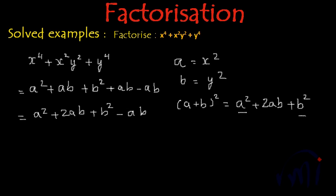This much is a plus b whole square, so this can be written as a plus b whole square and this is minus ab.